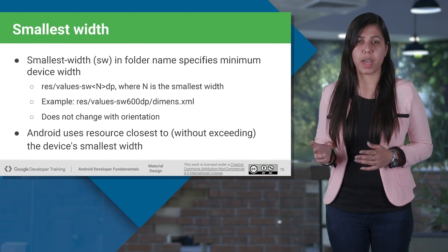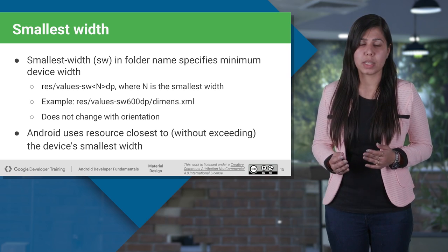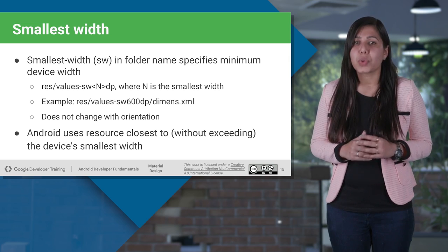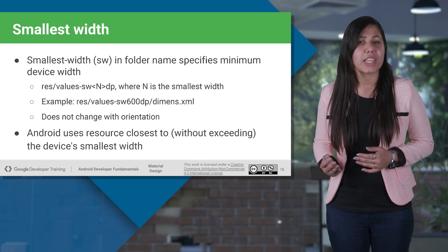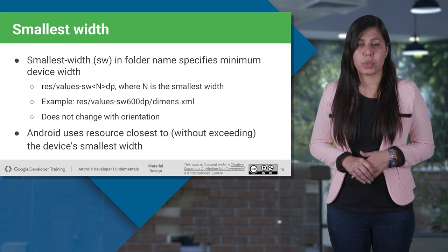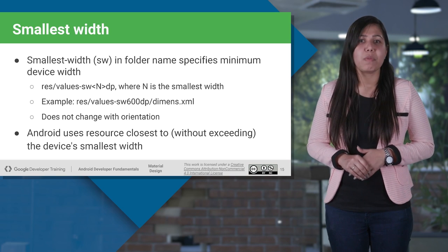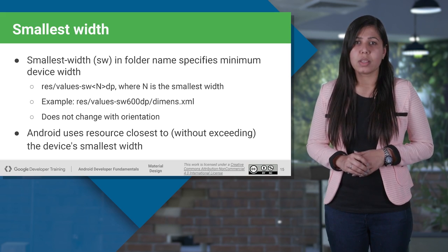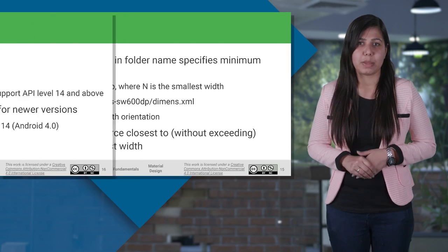The smallest width qualifier allows you to target screens that have a certain minimum width given in DP. For Android to pick up the correct resource, we must create a new resource folder with a naming convention that specifies the minimum DP supported by the resource. For example, the typical 7-inch tablet has a minimum width of 600 DP, so you can specify its values folder as values-sw600dp.